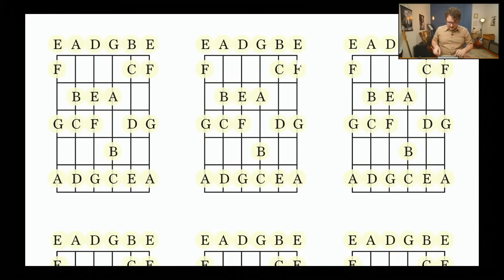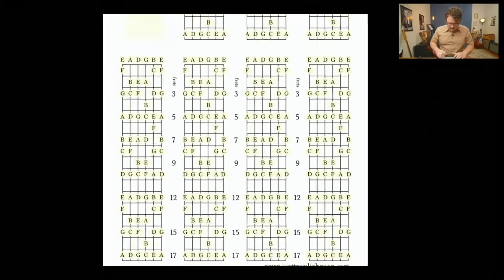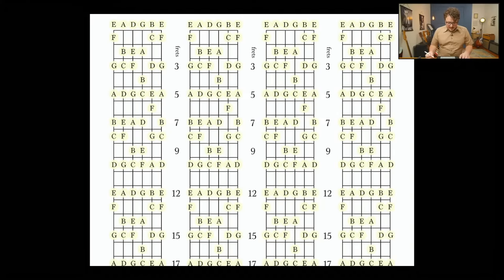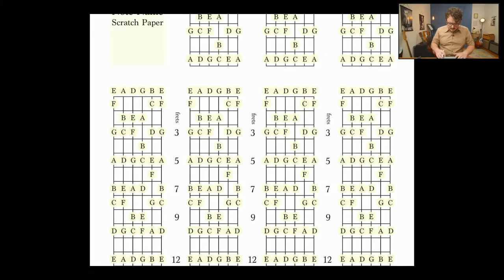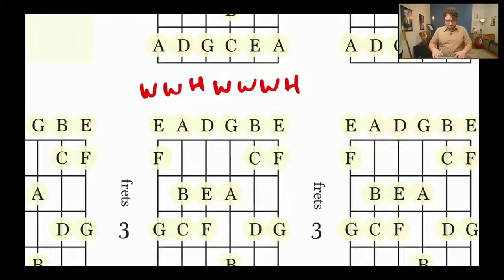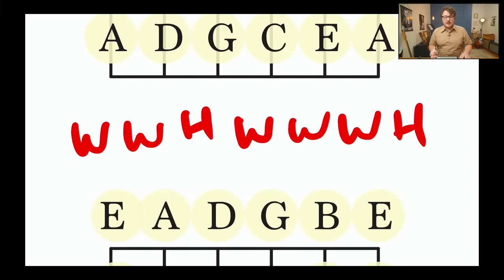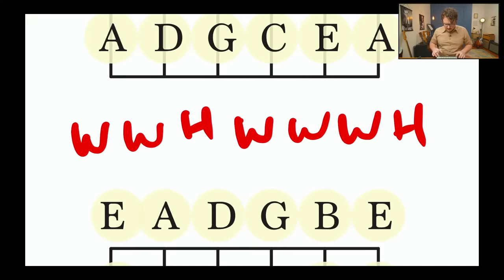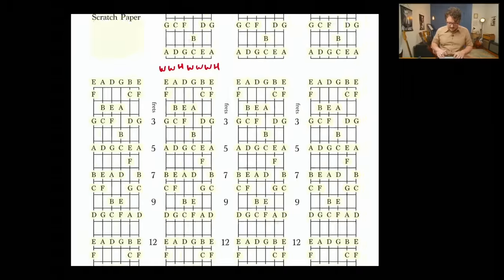I already have a lesson out there about the major scale formula, so I'm going to go through it as a little review. Essentially, the major scale formula is whole, whole, half, whole, whole, whole, half. From just this formula, we can get so much info out of it. This is beginner friendly. Whole, whole, half, whole, whole, whole, half — this is the major scale formula.